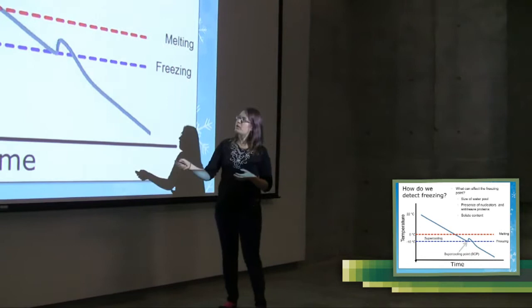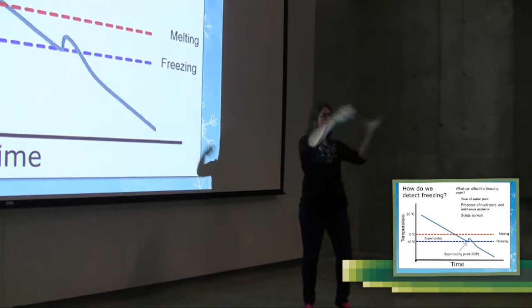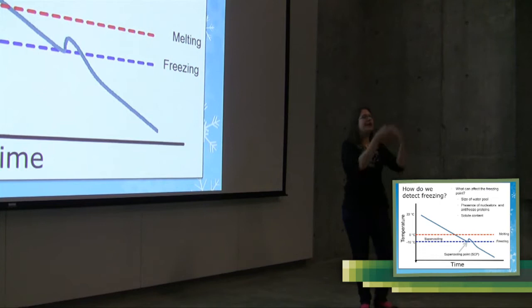So it cools, it cools, it cools. At some point, some of those molecules form that lattice that we're looking for, and they spread. As soon as a few little molecules make a lattice, they can induce that lattice shape in molecules around them. It's really strange. And so that's where we get the freezing point.